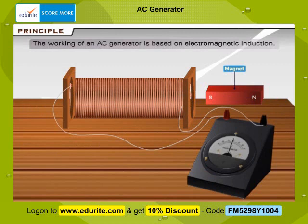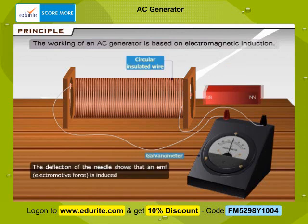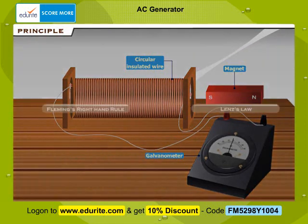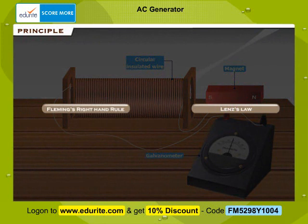The working of an AC generator is based on electromagnetic induction. That is, whenever the flux passing through a circuit changes, an EMF is induced in it and a current begins to flow. The direction of induced EMF is given by Fleming's right-hand rule or Lenz's law.